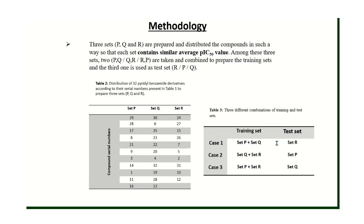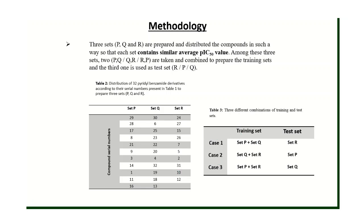Before taking combinations, we divided the descriptors into three sets so that each set contains a similar average pIC50 value. Then any two sets were used as training sets and the third as a test set, creating three different cases. For each case, we took three descriptors at a time and calculated all possible QSAR equations, obtaining the corresponding regression coefficient (R²) and standard deviation values. We then compared calculated pIC50 values against experimental pIC50 values from Masand et al.